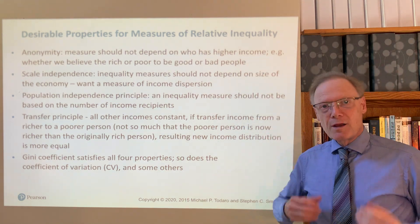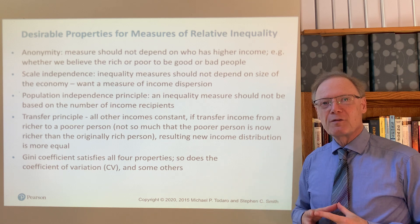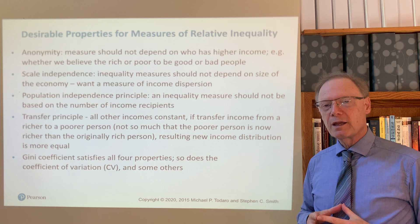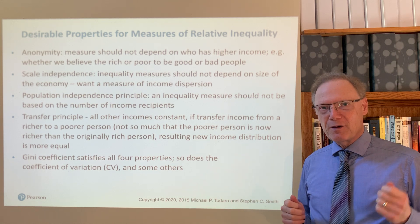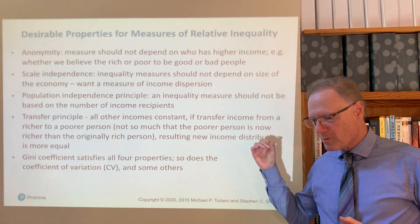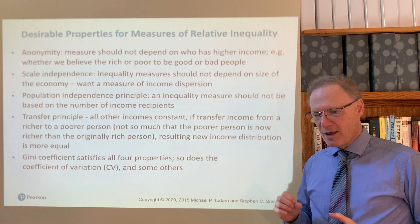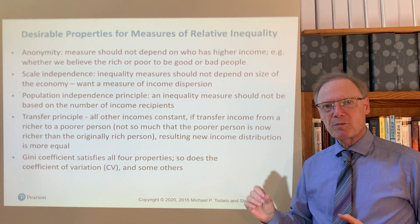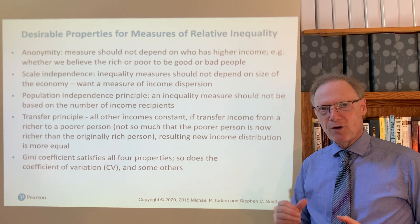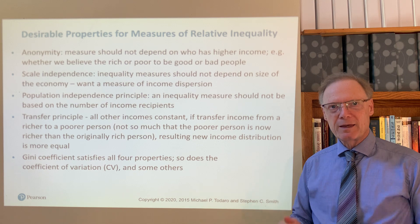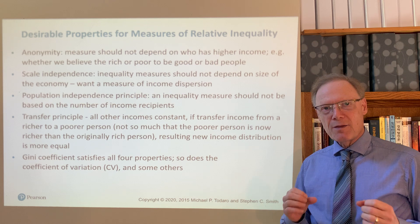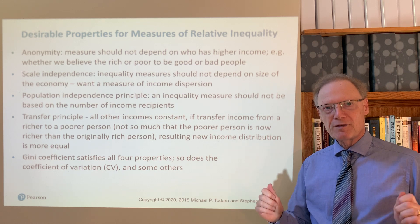As we consider desirable properties for indexes of different kinds in economic development and in economics more broadly, first we'd like to see indices that vary from zero to one. But we also like to make sure that we have an axiomatic approach — that is to say, we like to start with desirable properties for what we would like to see in a measure, and then check that any proposed measure satisfies these properties.